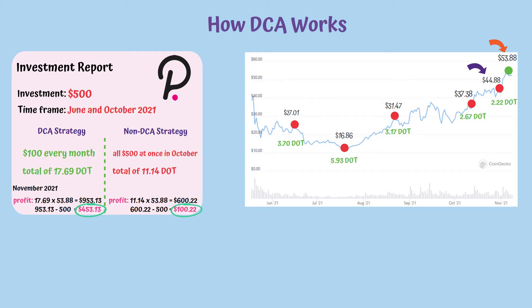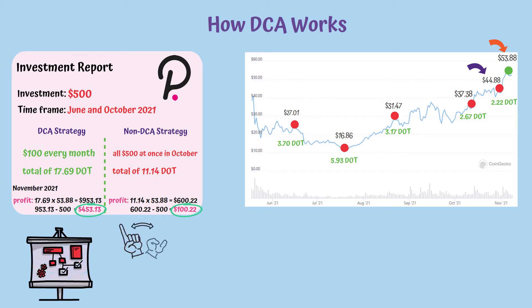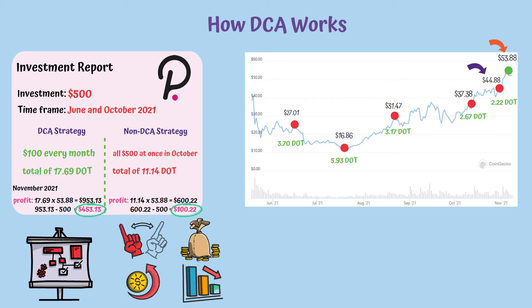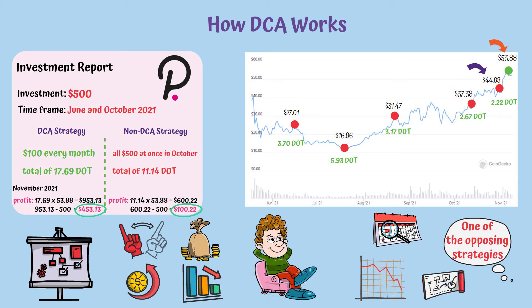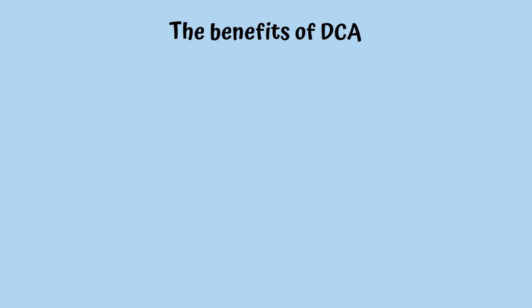Naturally, it goes without saying that this strategy cannot always lead to profit, or always offer you protection when the prices of crypto are falling. One of the opposing strategies is timing the market, in which you try to predict the performance of an asset, which makes it an active strategy. DCA, on the other hand, is a passive strategy because you don't have to follow the market trends, and you invest the same amount of money on a regular basis.